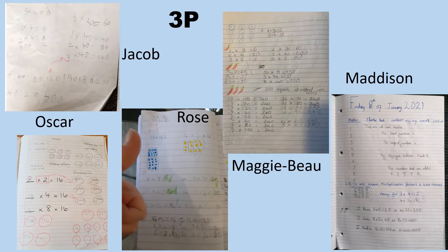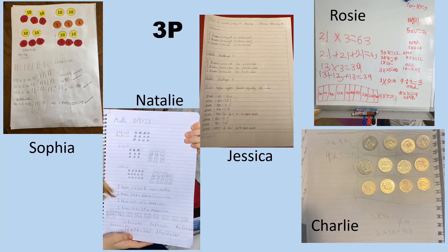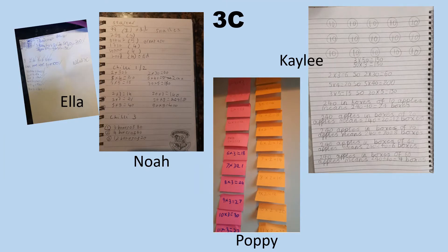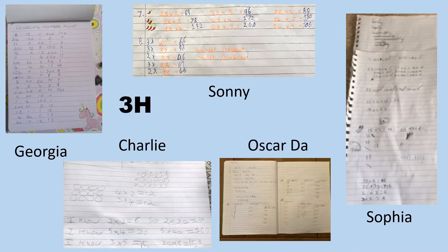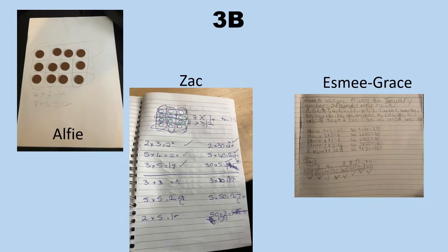We've got Jacob, Oscar, Rose, Maggie Bow, Madison, Sophia, Natalie, Jessica, Rosie and Charlie. In 3C thank you to Ella, Noah, Poppy and Kayleigh. In 3H thank you to Casey, Joel, Rahman, Thomas, Cameron, Georgia, Charlie, Sunny, Oscar DA and Sophia. In 3B thank you to Alfie, Zach and Esme Grace. Please keep sending in your work, and if you're not on there we know you're probably working hard at home, so ask your adult if they can send the work in for you.